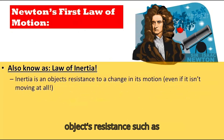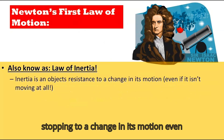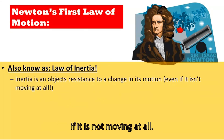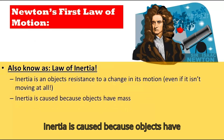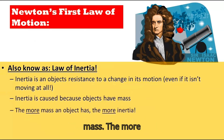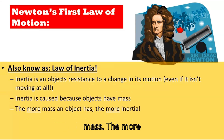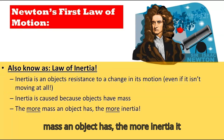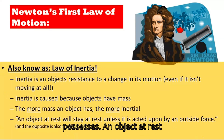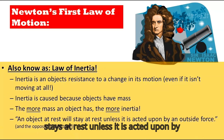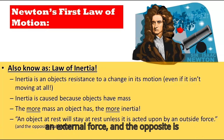The main points of Newton's first law are: inertia is an object's resistance to a change in its motion, even if it is not moving at all. Inertia is caused because objects have mass. The more mass an object has, the more inertia it possesses. An object at rest stays at rest unless acted upon by an external force, and the opposite is also true.